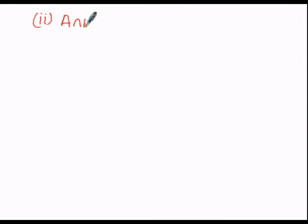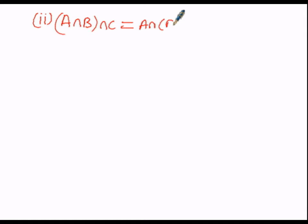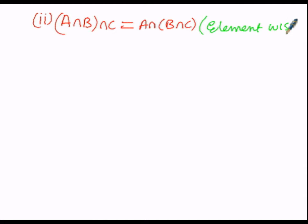Here we have to prove the associative law: A intersection B intersection C equals A intersection of B intersection C. We will prove this by means of element-wise proof. In order to prove this condition, we prove A intersection B intersection C equals A intersection of B intersection C.